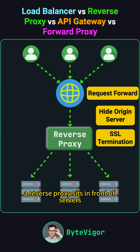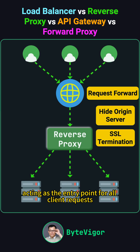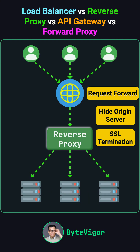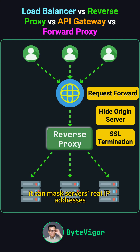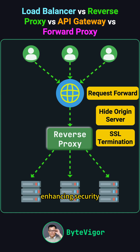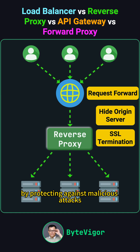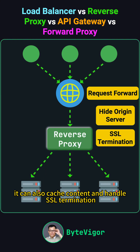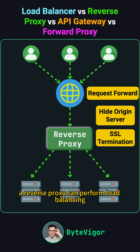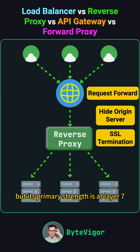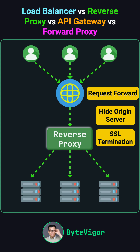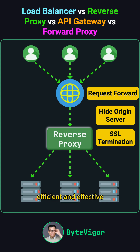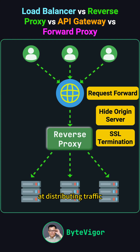A reverse proxy sits in front of servers, acting as the entry point for all client requests and forwarding them to a back-end server cluster. It can mask servers' real IP addresses, enhancing security by protecting against malicious attacks. It can also cache content and handle SSL termination. A reverse proxy can perform load balancing, but its primary strength is at layer 7. In high-traffic situations, dedicated load balancers are typically more efficient and effective at distributing traffic.